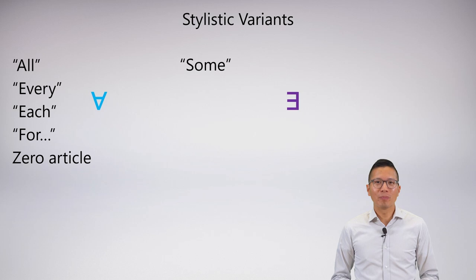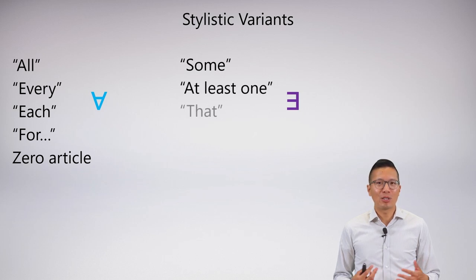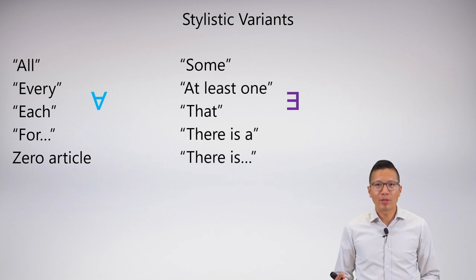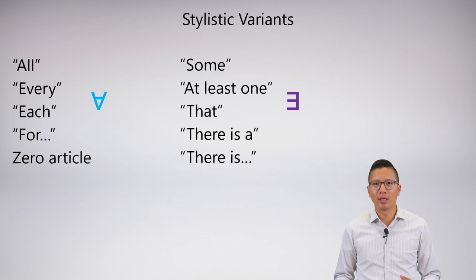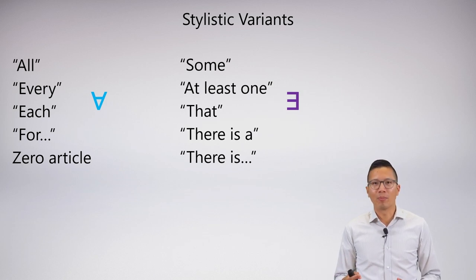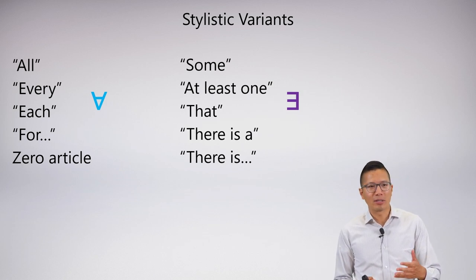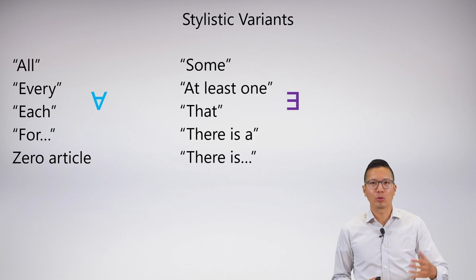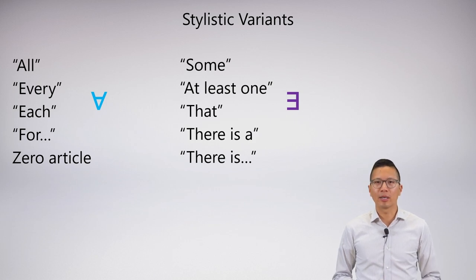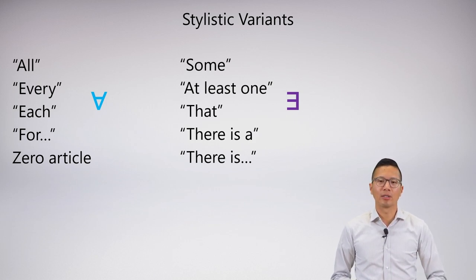For the existential, I've been using a bunch of these already: something, at least one, there is a, there is, there is some, there is at least one. Also 'that' — when I say 'that mouse over there' or something like that — these are all stylistic variants of the existential.